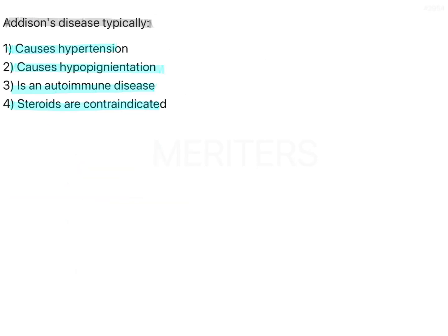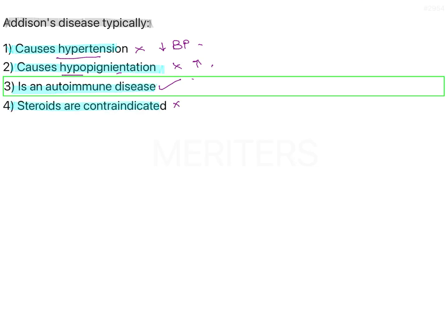Now reviewing the options: Does it cause hypertension? No — it causes reduction in blood pressure. Does it cause hypopigmentation? No — it causes increased pigmentation. Is it an autoimmune disease? Yes. Are steroids contraindicated? No, because it is an autoimmune condition requiring steroid replacement. So the correct answer is option 3.